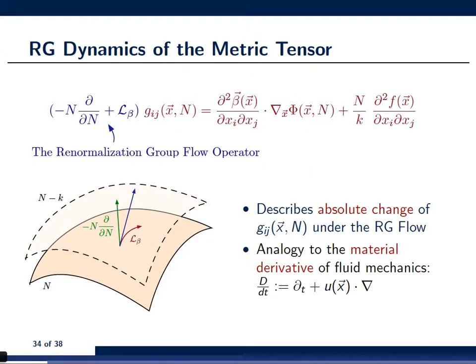Now, the operator that is acting on the left-hand side on the thermodynamic metric is what we call the renormalization group flow operator. Now, this operator describes the absolute change of the metric Gij under the RG flow, and it mainly consists of two parts. The first part is sort of a change in the relative system size, and it's given by the operator N dD/dN. It's because the renormalization group causes a rescaling of the system.